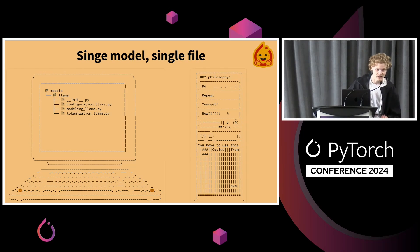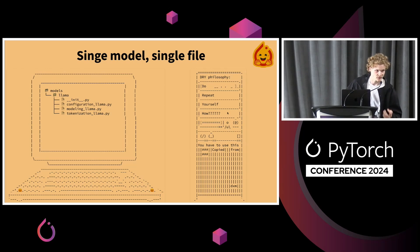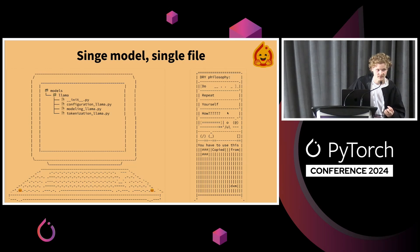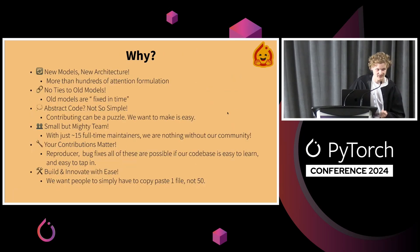We call that the single model, single file approach. With every single new model, we create a new file that corresponds to that model, and we do repeat ourselves. It's something that is maybe controversial, but that's the way we chose. So we have around 250 different attention formulations — some of them are the same, so we copy-paste the code.